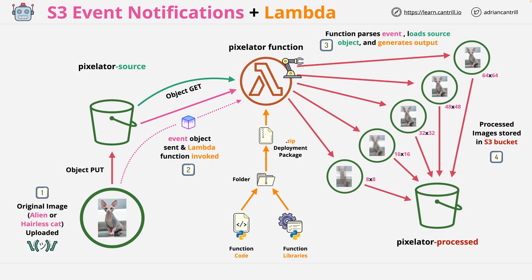That's it for this demo lesson. You've implemented a simple event-driven serverless image processing pipeline which uses S3 event notifications together with Lambda. This is a pretty simple example, but it can be used to create much more complex workflows, potentially just using Lambda or even using Step Functions. In this demo we kept it simple, implementing something which used a custom deployment zip containing libraries not contained within the Lambda runtime environment, giving you a little bit of experience at creating a custom deployment zip for use with Lambda. Go ahead and complete this video, and I look forward to you joining me in the next exciting theory or demo lesson.